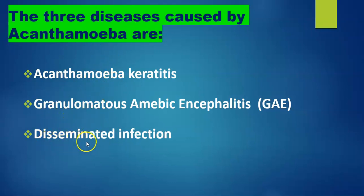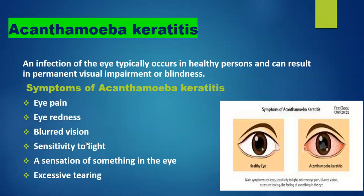First, we see Acanthamoeba keratitis — an infection of the eye that typically occurs in healthy persons and can result in permanent visual impairment or blindness. The causes: the amoeba can be spread to the eye through contact lens use, cuts or wounds, or by being inhaled into the lungs. Most people will be exposed to Acanthamoeba during their lifetime, but very few will become sick from this exposure.